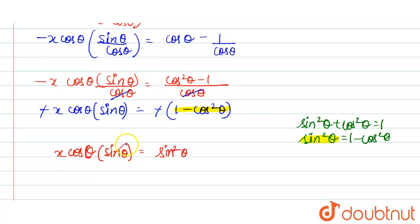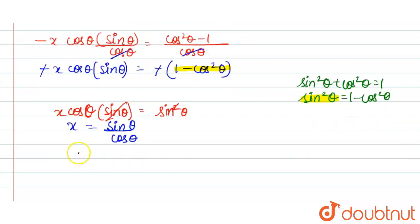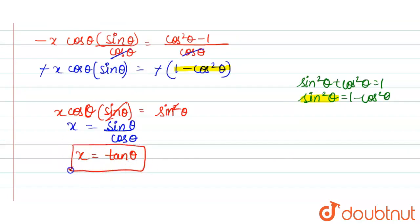Here sin θ cancels from both sides, so we get x = sin θ / cos θ. Therefore the value of x is equal to tan θ, and this is our required answer.